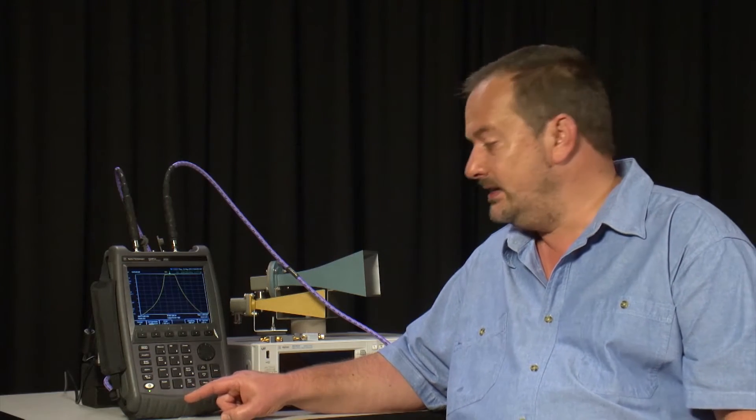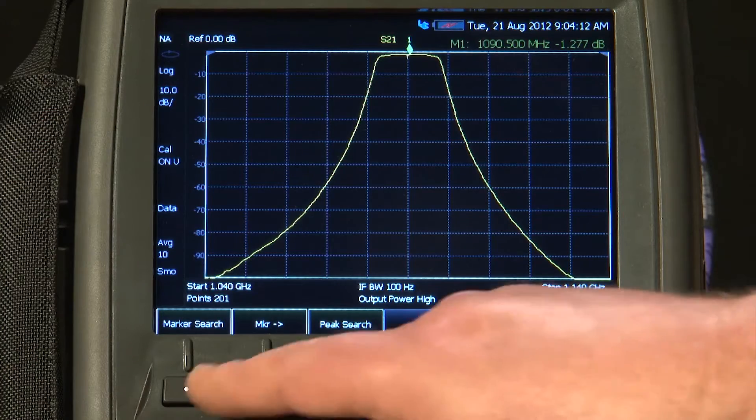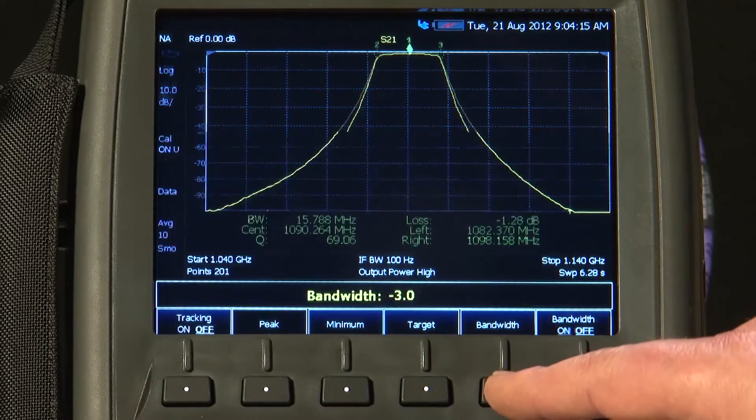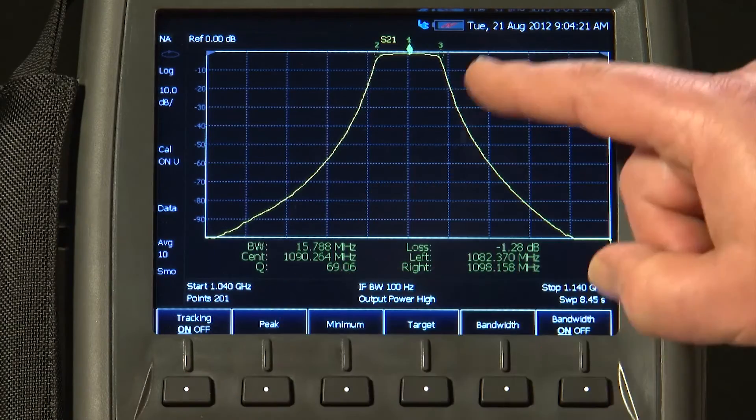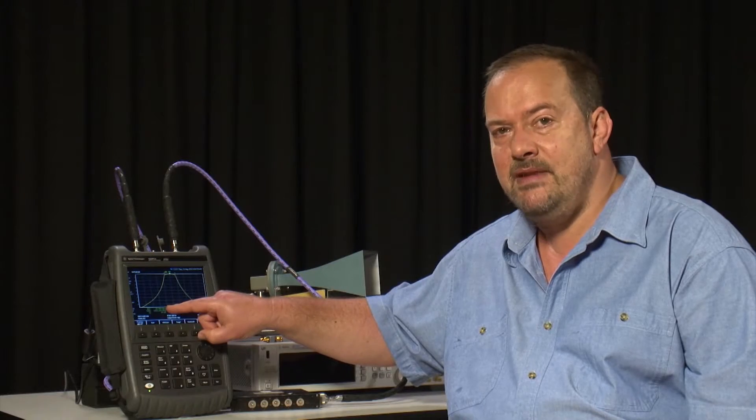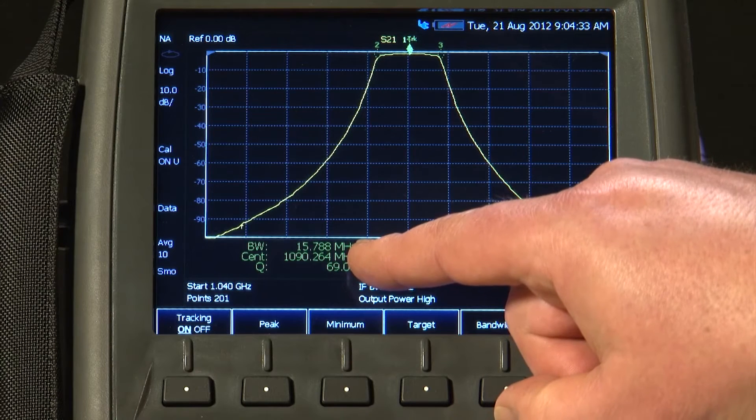Another useful feature with the markers, if I press the Marker Arrow button again, and go Marker Search for Bandwidth, and put Tracking On, you will see that the FieldFox has put three markers on the display here, and is automatically measuring the bandwidth of the filter, which you can see is 15.78 MHz.